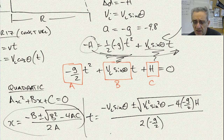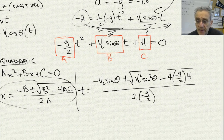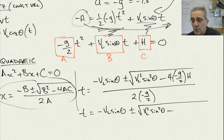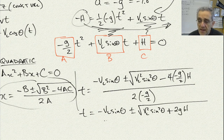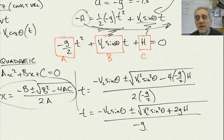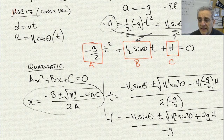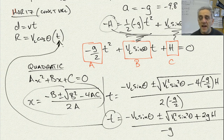I can simplify a few things. I get T equals negative VL sine theta, plus or minus the square root of VL squared sine squared theta plus 2GH — since the two negatives become a plus — all divided by negative G, since the 2s cancel. That's about as far as I can go. Once I solve for T, I can take that value and plug it into R equals VL cosine theta times T to calculate the range.